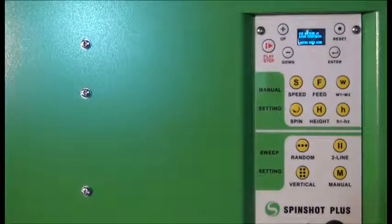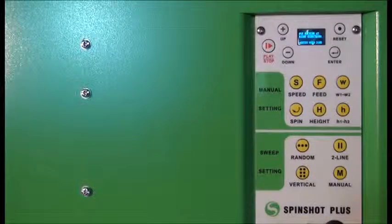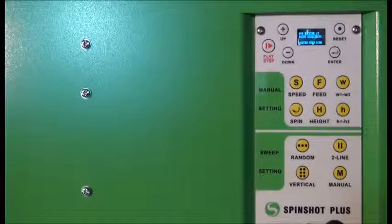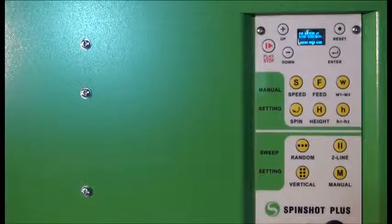This is the Spinshot Plus control panel. When the machine is switched on, it automatically defaults to the center line. This lets the user align it with the center line of the court, ensuring the balls will be delivered evenly in either two-line or horizontal oscillation mode.